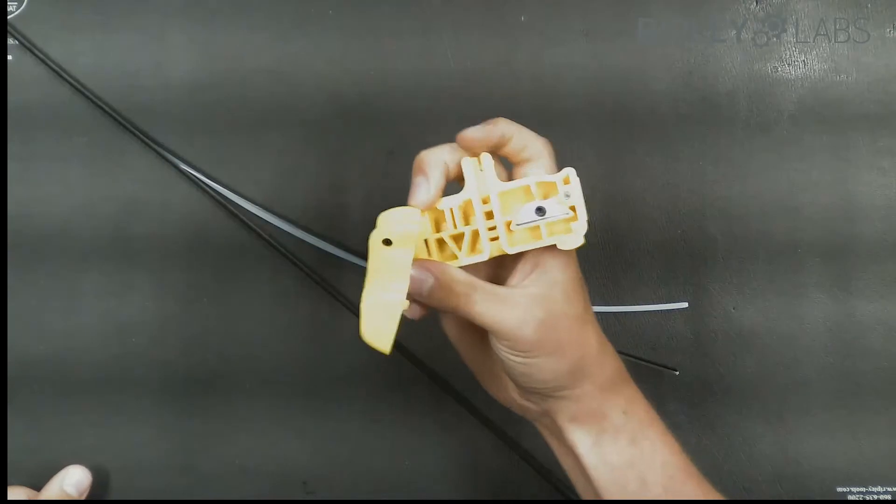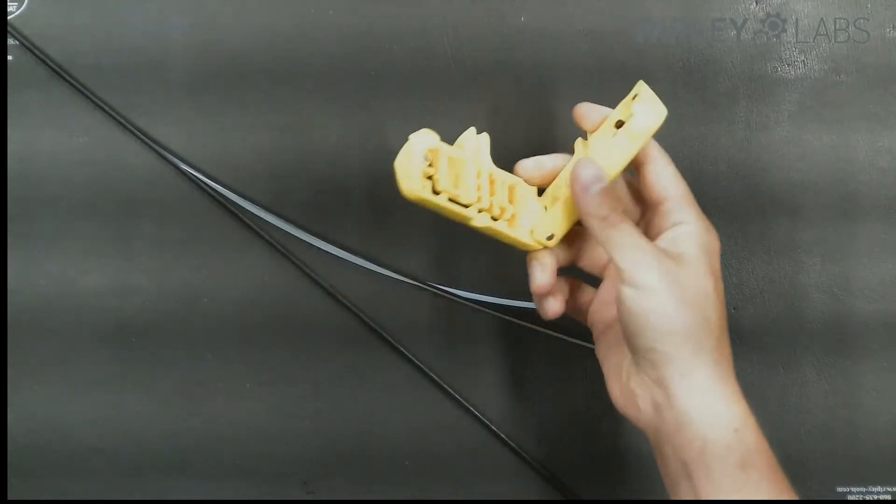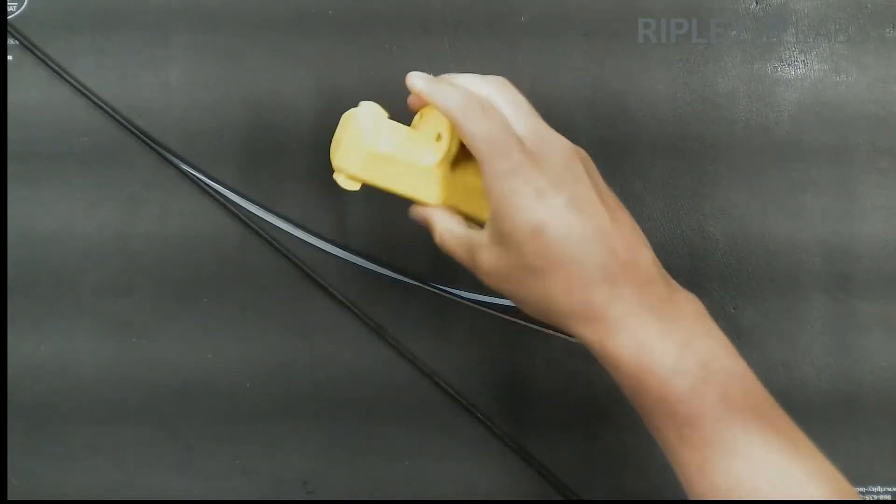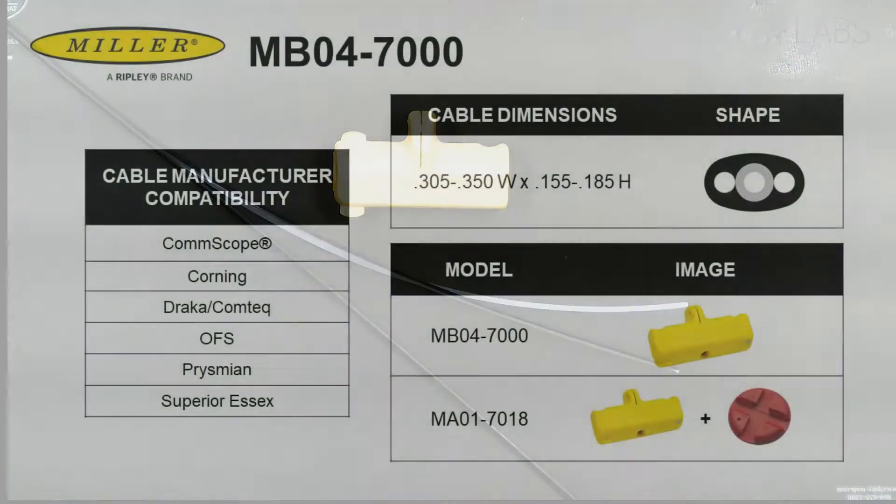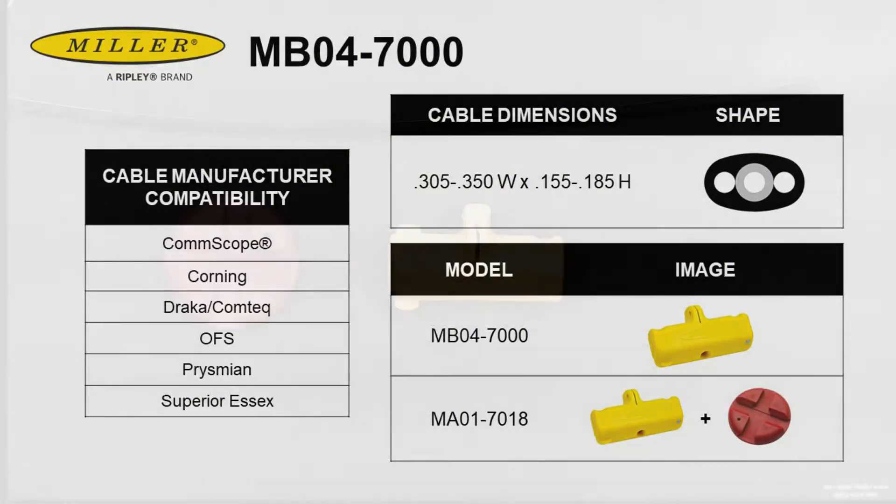The tool has spare blades and a hex wrench on board. It fits in the hand for a secure hold and ergonomic pulling motion. The MBO4-7000 is compatible with many flat drop cable manufacturers.